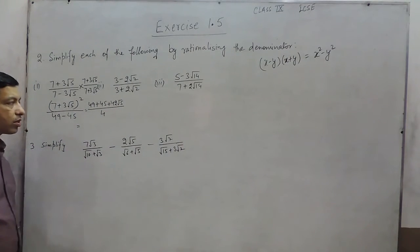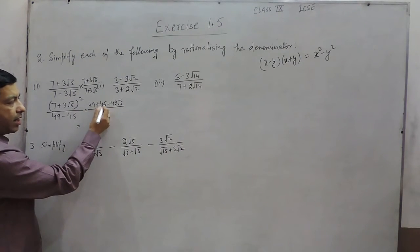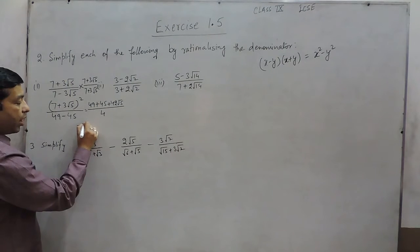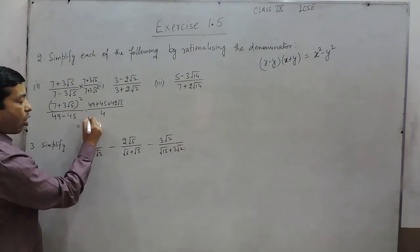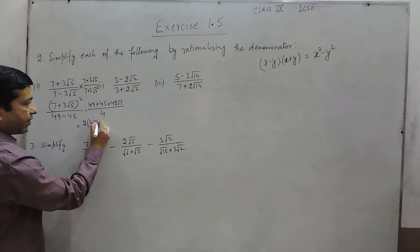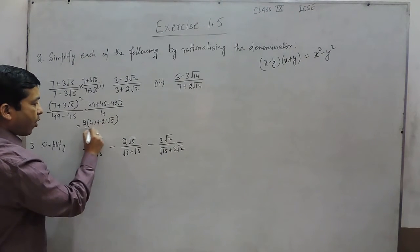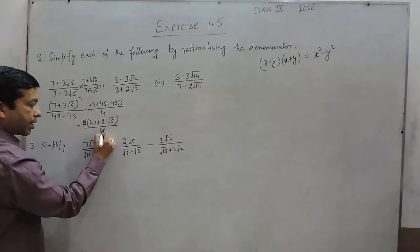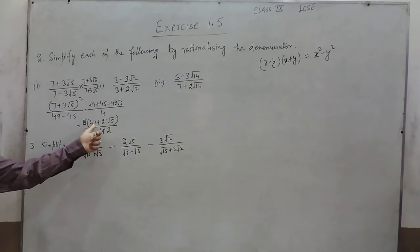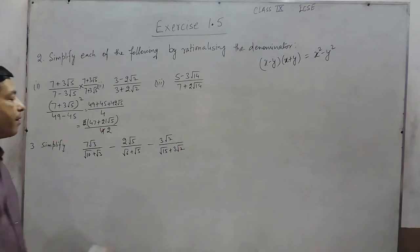So the numerator is 94 plus 42 root 5. Taking 2 as common, we get 2 times (47 plus 21 root 5) upon 4. The 2 cancels, giving the correct answer: (47 plus 21 root 5) upon 2.